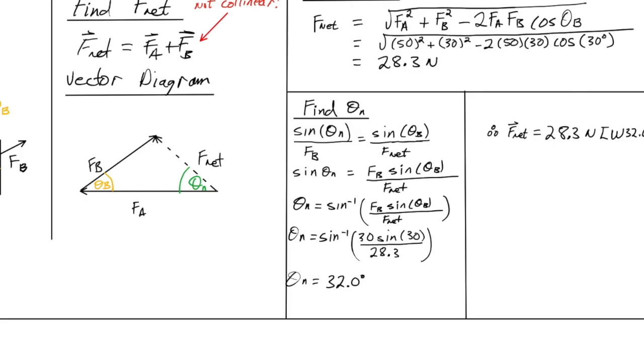So, the next step is we need to isolate for theta N. Well, first step is we have to take FB and bring it to the other side. Since FB is in the denominator here, that is equivalent to division. The opposite of division is multiplication. Next step, we need to remove sine. Well, the opposite of sine is arc sine. So, we need to take the arc sine of both sides, which gives me sine inverse or arc sine of bracket FB sine theta B over Fnet. Substituting our values in, we end up getting an angle of 32 degrees.